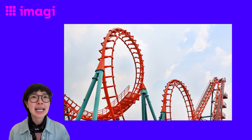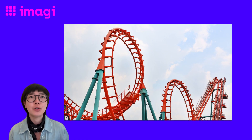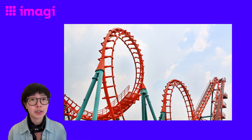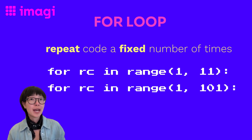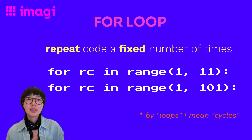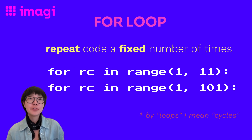Then there's the for loop. Picture the most intense roller coaster you've ever seen with several loops — that's our for loop. It's a loop that runs a set number of times, just like a roller coaster goes through those loops. A for loop in Python is like going on a roller coaster ride with a fixed number of loops. You're buckled in and you know exactly how many loops are coming up. No surprises.